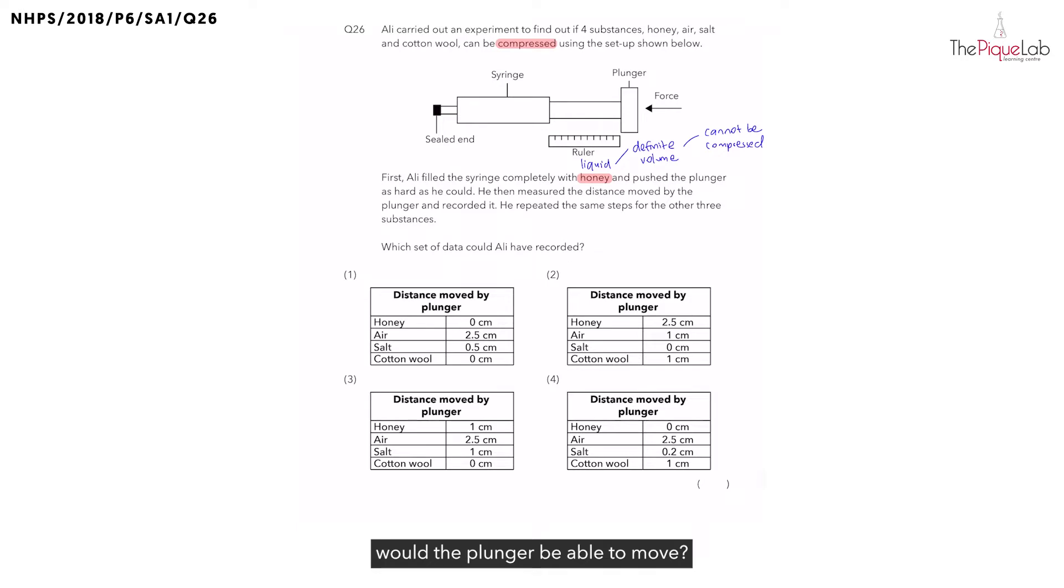No, right? Which means the distance moved by the plunger must be 0 cm. So, in this question, they ask which set of data could Ali have recorded? Since we already said the distance moved by the plunger for honey must be 0 cm, which options can we eliminate? Straight away, we can eliminate options 2 and 3 because the distance moved by the plunger for honey is more than 0 cm. Therefore, options 2 and 3 are out, whereas options 1 and 4 are possible.